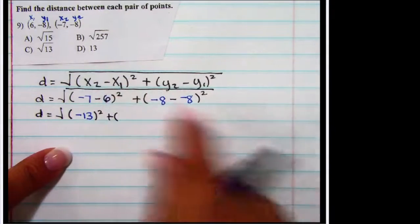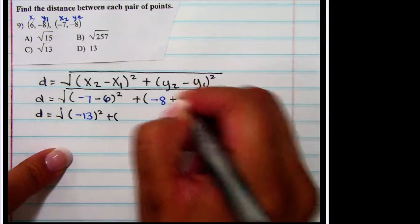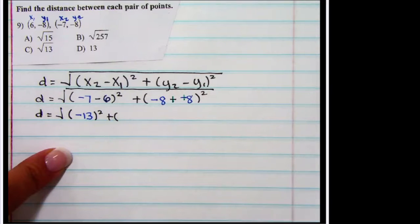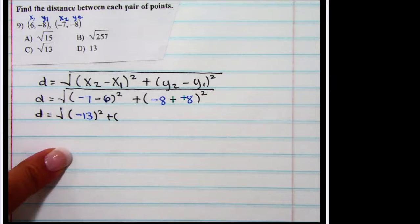Inside the next group, oh, I've got a double negative. In order to clear out a double negative, it turns into a positive. And so now I have negative 8 plus 8. That is 0.